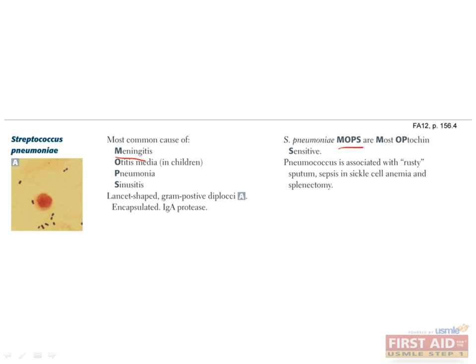Remember for later that N. meningitidis is the most common cause for those people between 6 and 60 years old. H. influenzae used to be the most common cause of otitis media in children before the Hib vaccine was developed. Now strep pneumoniae has replaced H. flu as the leading cause of this infection in the middle ear. Strep pneumoniae is the most common cause of pneumonia in people aged 40 years and up — adults and the elderly. Suspect pneumonia in patients who present with fever, productive cough, rusty colored sputum, and consolidation on chest x-ray.